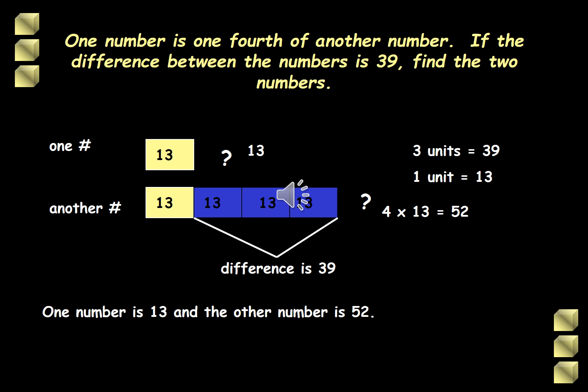Now out of this, another part of the problem is that their difference is 39. If you look at the bar models, the difference is actually 3 units. So now we can solve for the value of each unit. So we have 3 units that is equal to 39 because that's their difference.